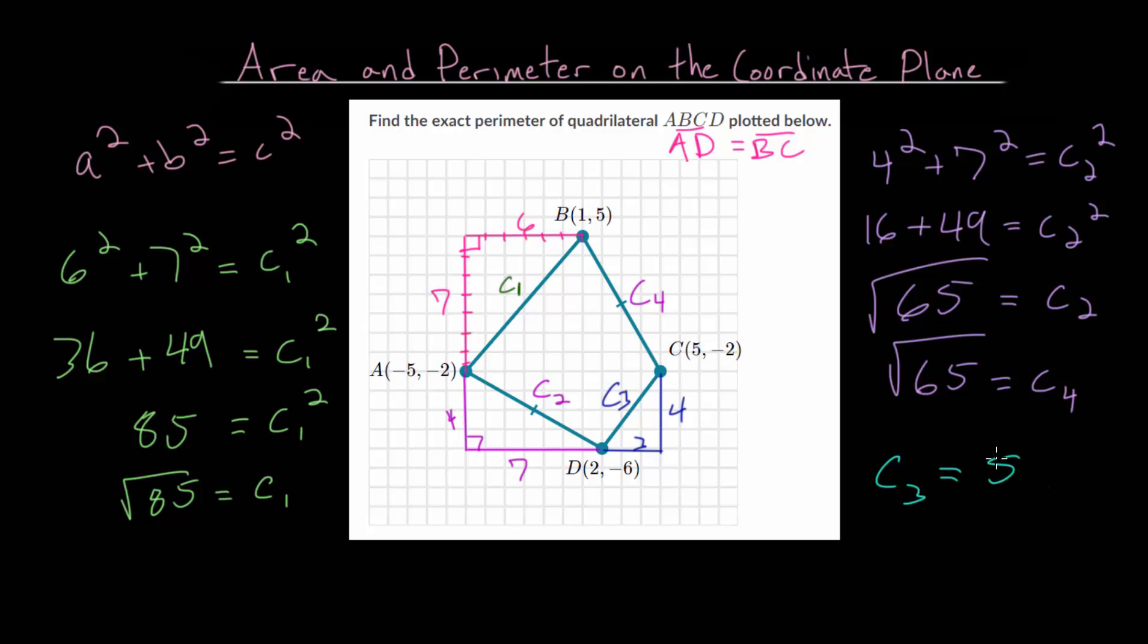And if you don't remember that one, I encourage you, just use the Pythagorean theorem. 3 squared plus 4 squared is equal to c3 squared. And you get 9 plus 16, which is 25. And the square root of 25 is 5. So we found all the side lengths.